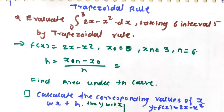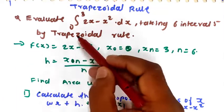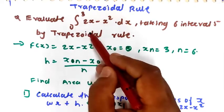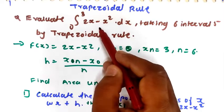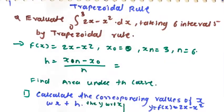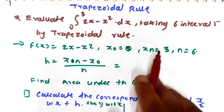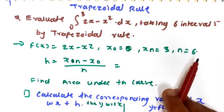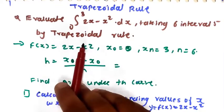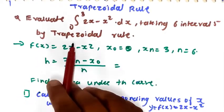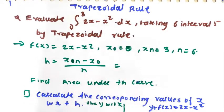Hello everyone. In this video we are going to see a numerical on the trapezoidal rule. The numerical is: evaluate the integration from 0 to 3 of (2x minus x squared) dx. You have to solve this using six iterations by the trapezoidal rule.